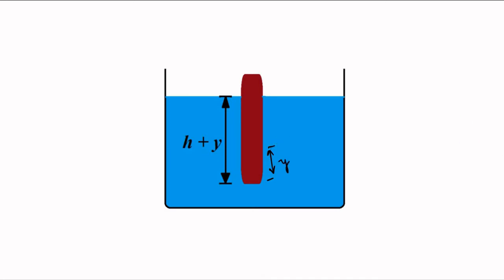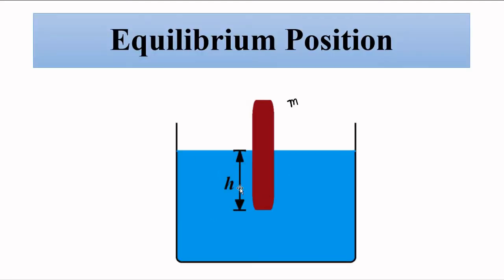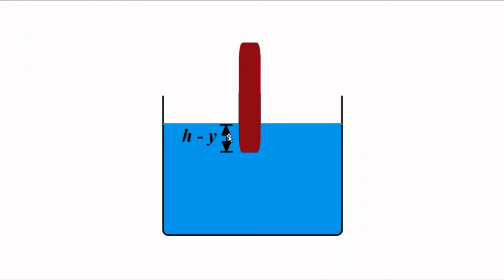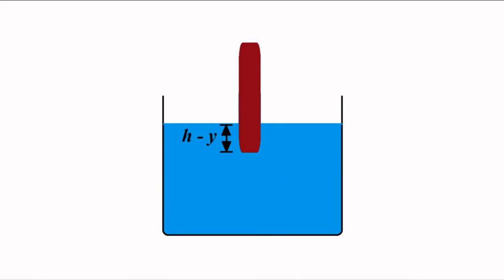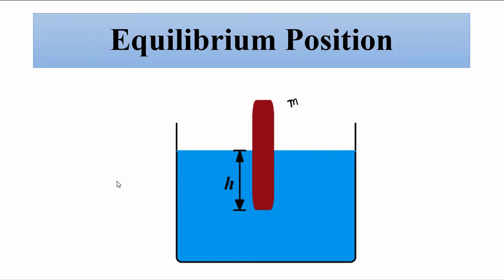When this wooden cylinder is pushed downwards by the additional distance y, there will be a restoring force acting on it which will try to push it back upwards towards the equilibrium position — and further upward by the same margin y, making that the other extreme position. Then it will come back down to equilibrium, go up again, and so on. This oscillatory motion is simple harmonic motion.